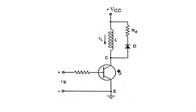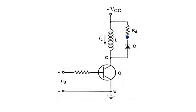When the transistor is in the OFF state — that is, when there is no positive input applied — the inductor has no charging path. If any previous charge is present, it discharges through the diode, and the current circulates in that same loop.